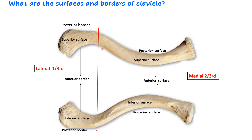The medial two-thirds of the clavicle shaft is cylindrical in shape, so there are no obvious borders - only four surfaces: superior, inferior, anterior (which is convex anteriorly), and posterior (which is concave). The lateral one-third is flattened from above downwards, so it has two surfaces - superior and inferior - and two borders: the anterior border and the posterior border.